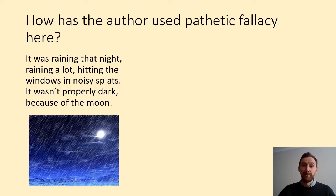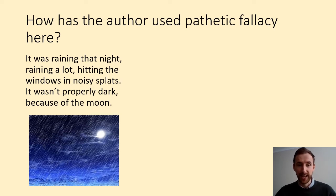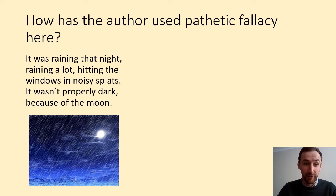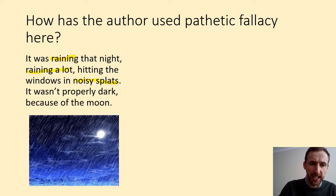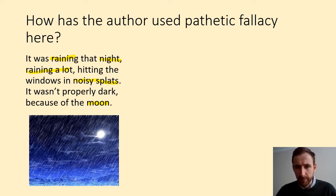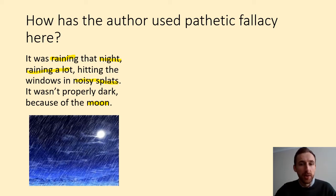I've explained how pathetic fallacy can be used to create a particular effect. What I'd like you to do now is read this short extract of text and respond to the question: how has the author used pathetic fallacy here? Pause the video to do that. You'll have spotted the fact that the author used the weather — it was raining, raining a lot, creating noisy splats against the windows — and the fact that it was nighttime, the moon was out creating an eerie glow. All of those are examples of pathetic fallacy and they contribute towards a sense of foreboding. We expect that something bad is about to happen because it's raining and dark, and these are things we associate with negativity.